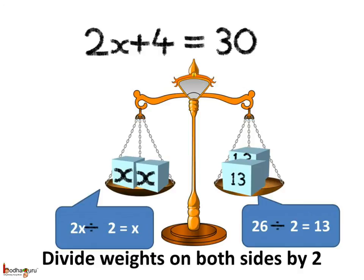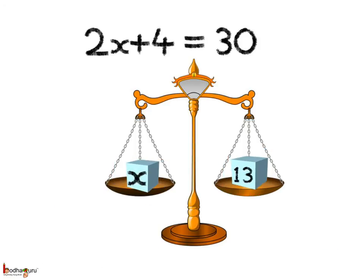Remember, weights on both sides need to be divided by 2, not just one side, to keep the balance correct. Look here, we get x equal to 13, and the weights are balanced. So this is the correct value — x is equal to 13.